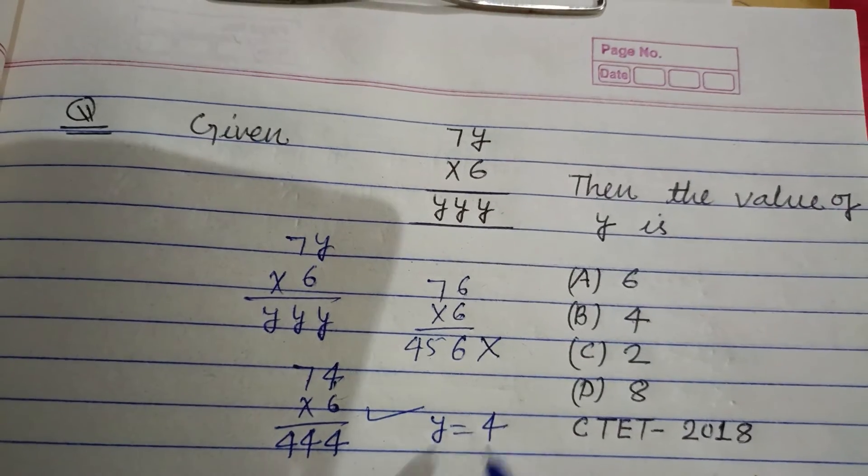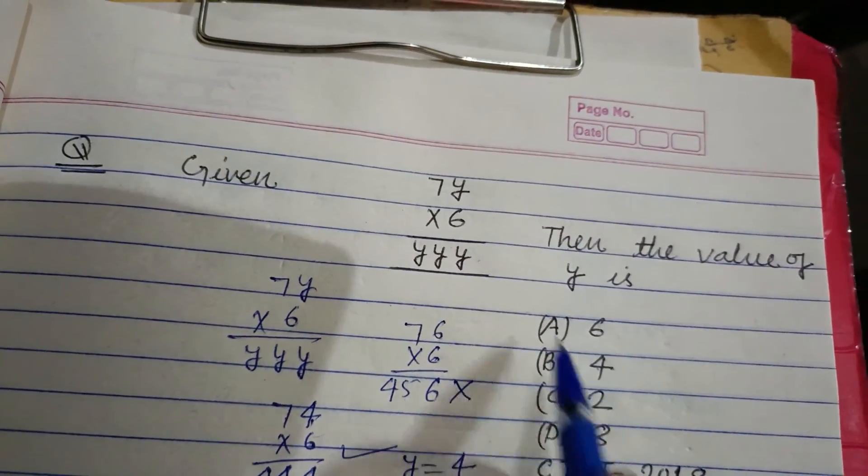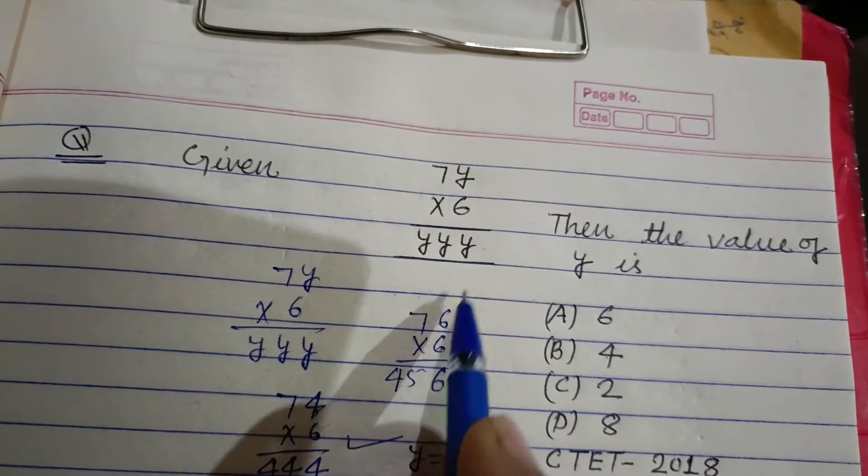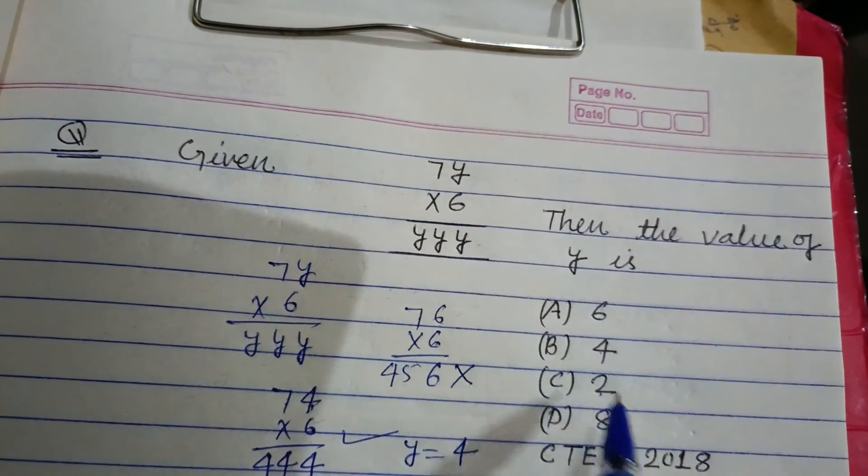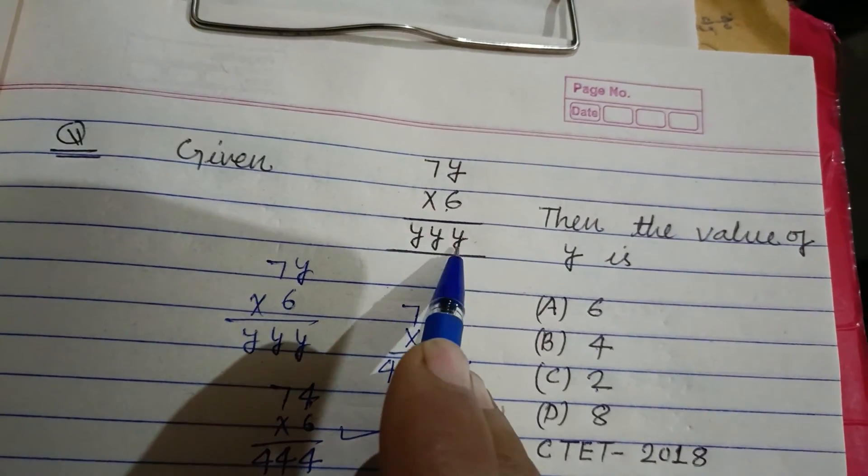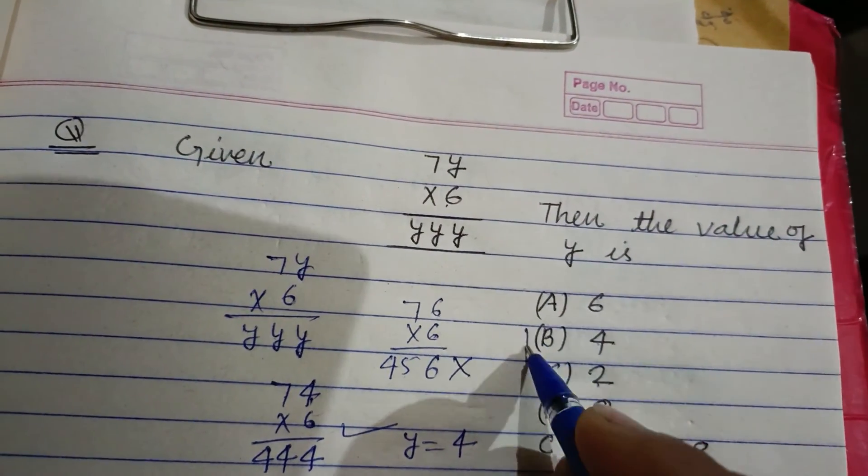If we put 2, then 6×2 is 12, so 2 is coming here - that is not correct. If we put 8, 6×8 is 48, so 8 is coming here - this is not the answer.